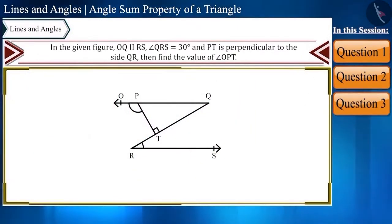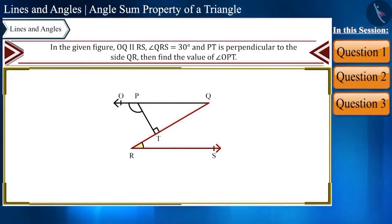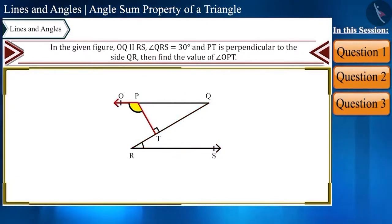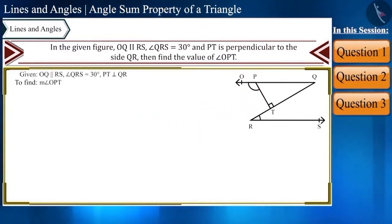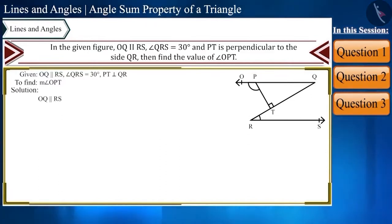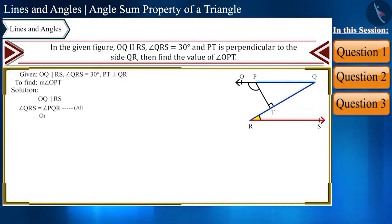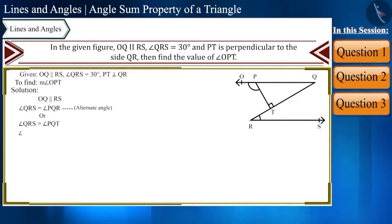Let's move to the last question. In the given figure, OQ is parallel to RS, angle QRS equals 30 degrees, and PT is perpendicular to side QR. We need to find the value of angle OPT. Since OQ is parallel to RS, angle PQT is an alternate angle to angle QRS, therefore angle PQT equals 30 degrees.